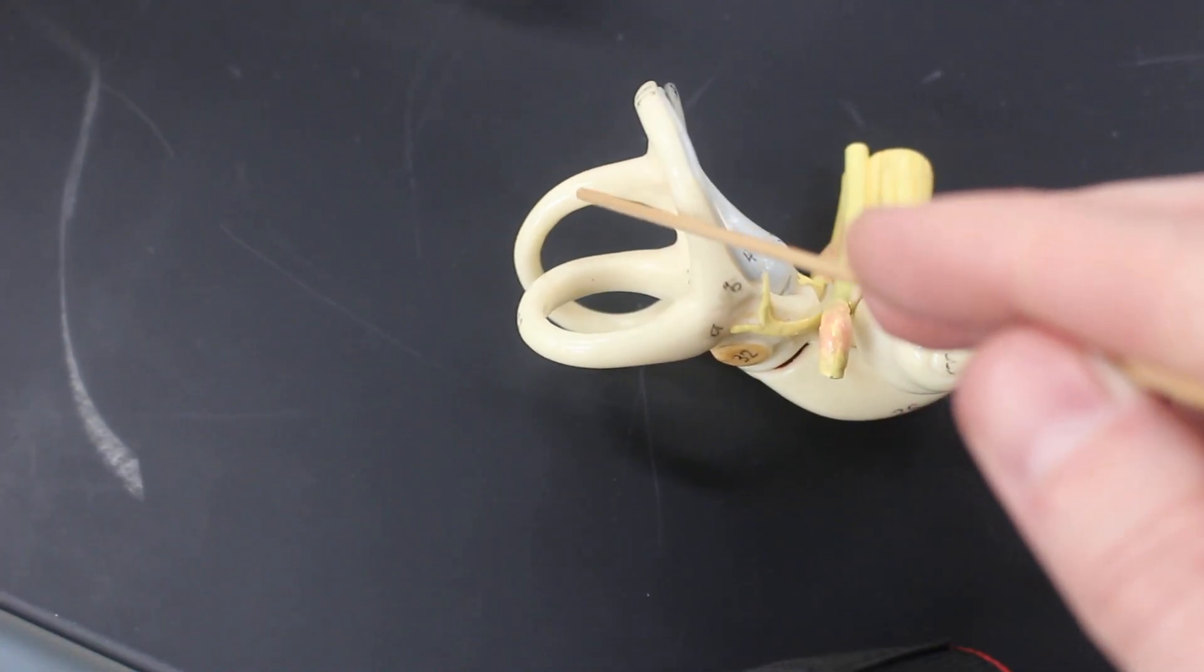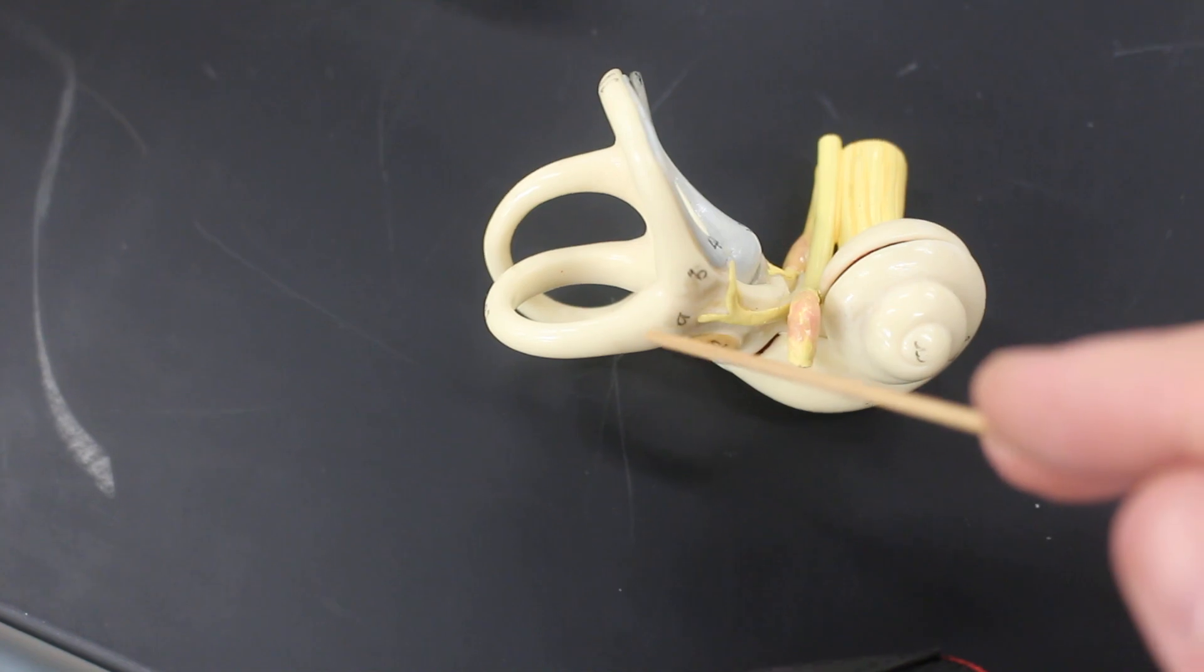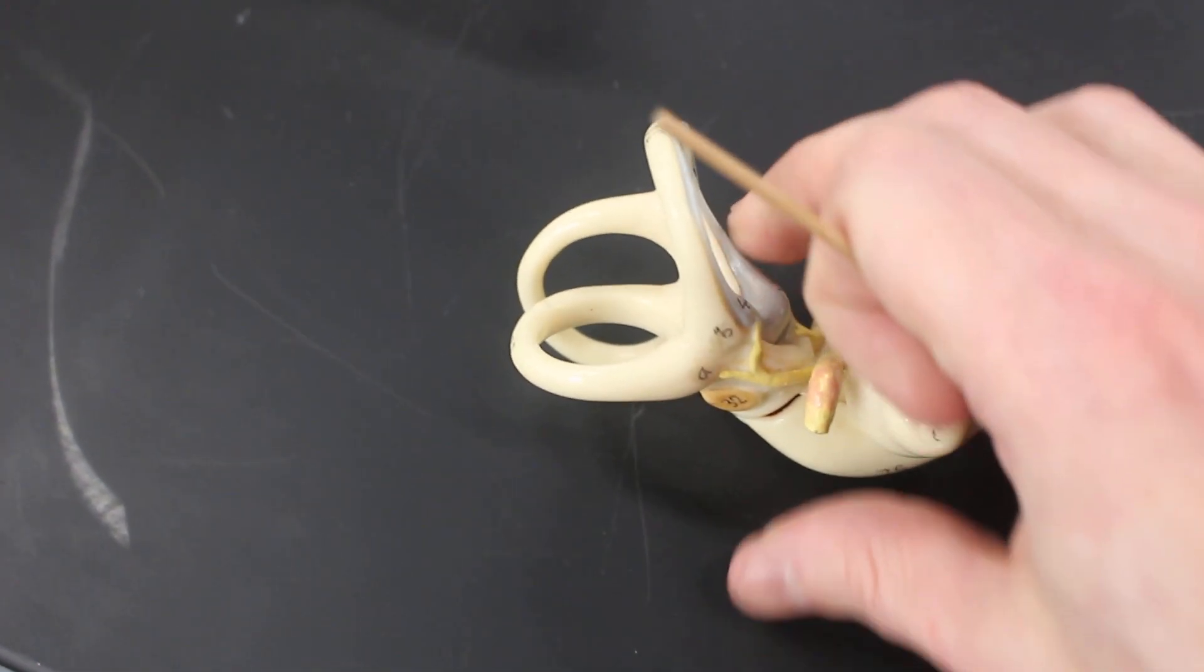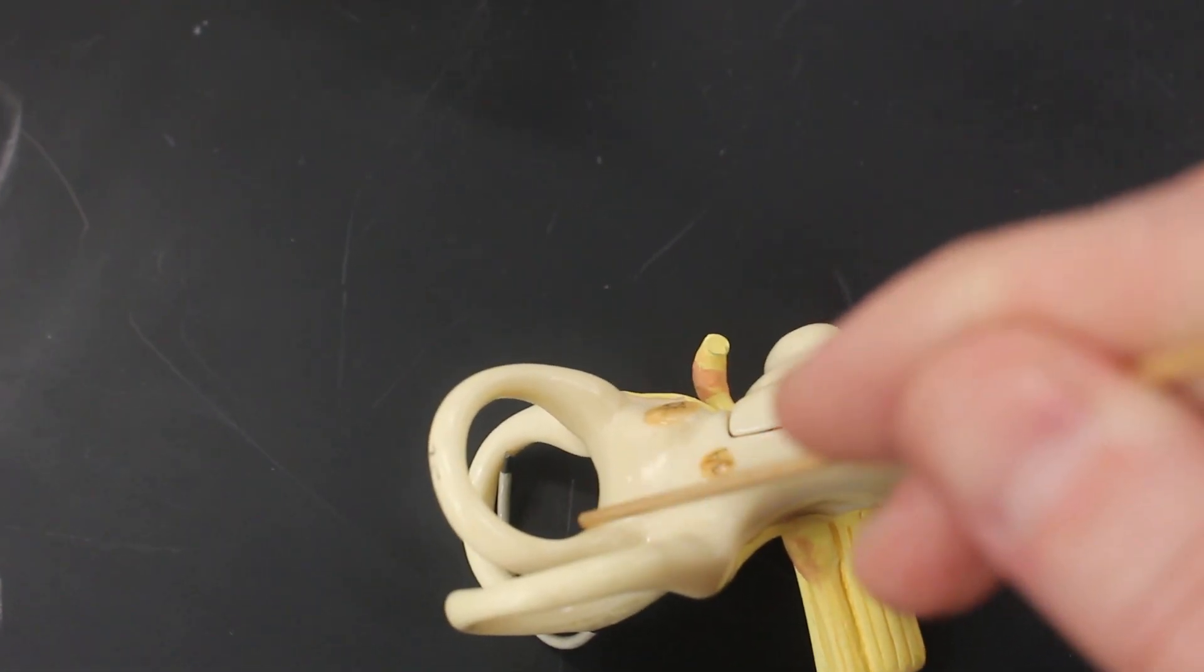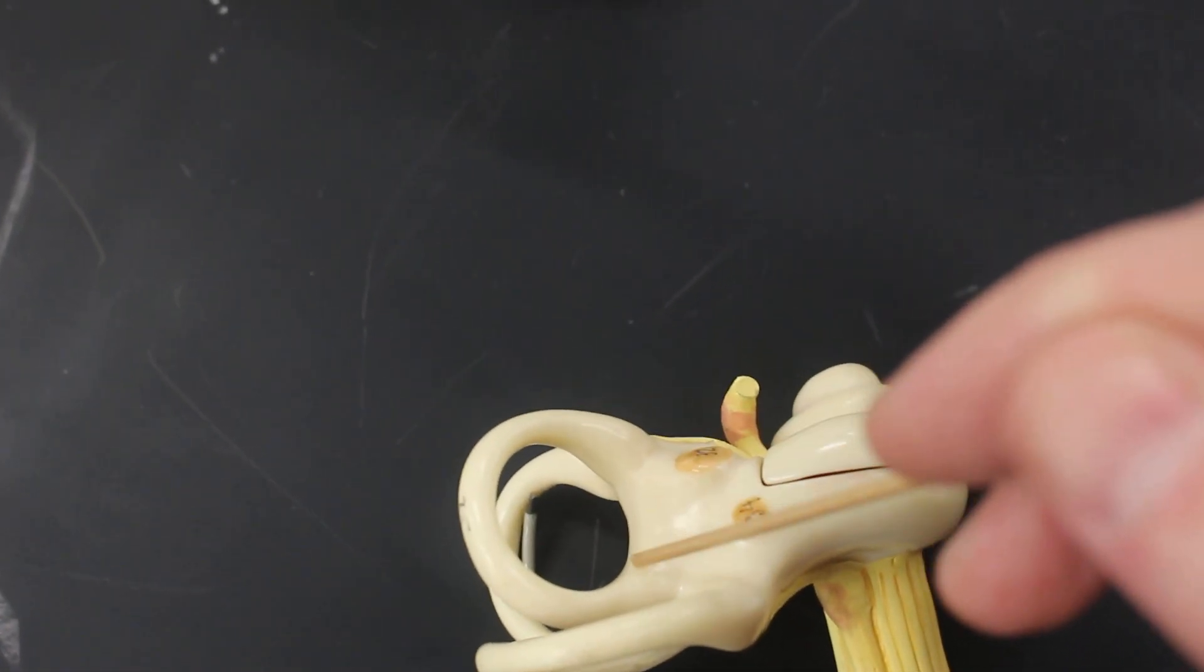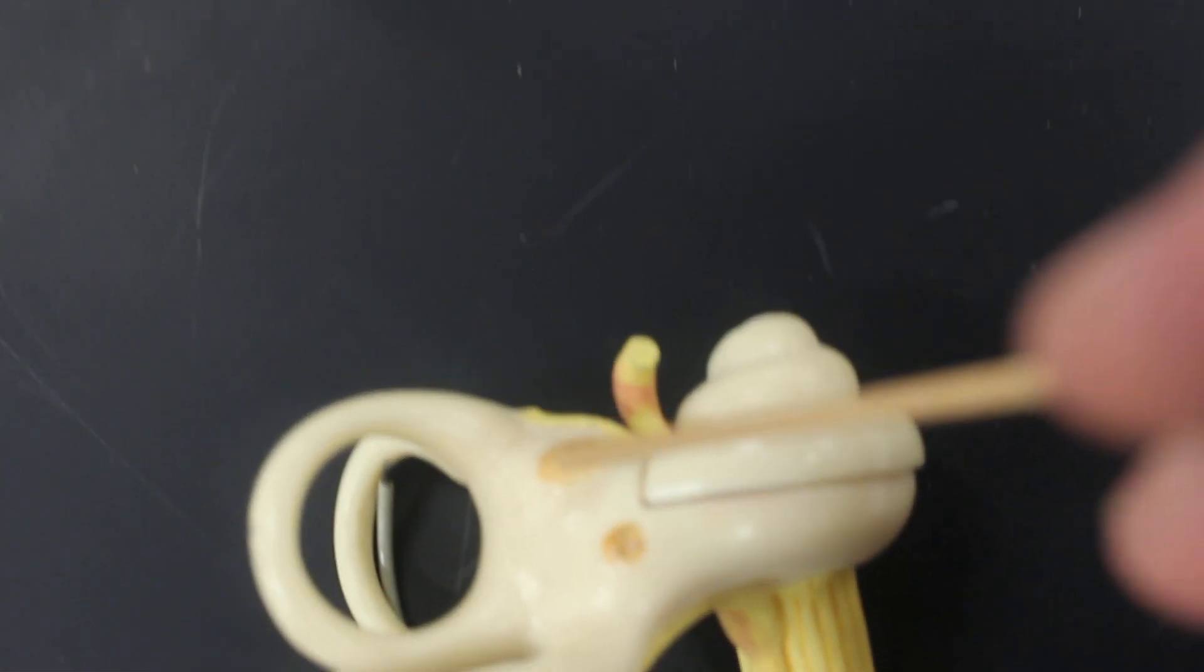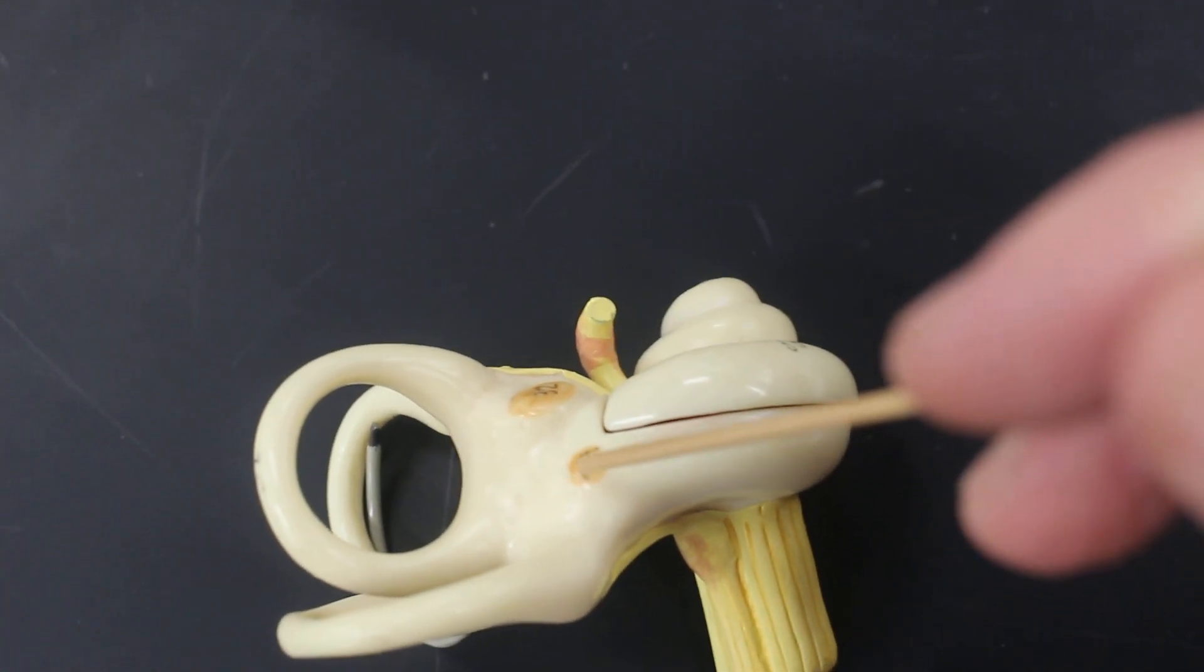The semicircular canals end in the ampulla. This middle chunk here is the vestibule, which includes the oval window that the stapes fits into and the round window.